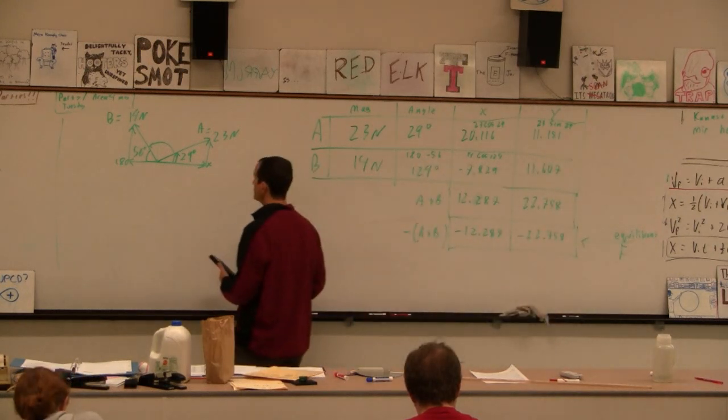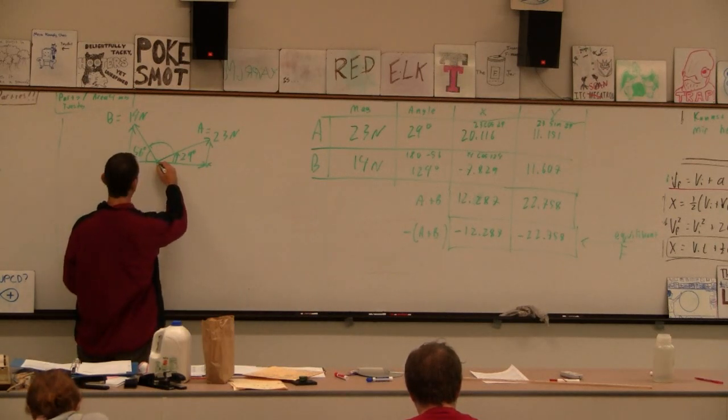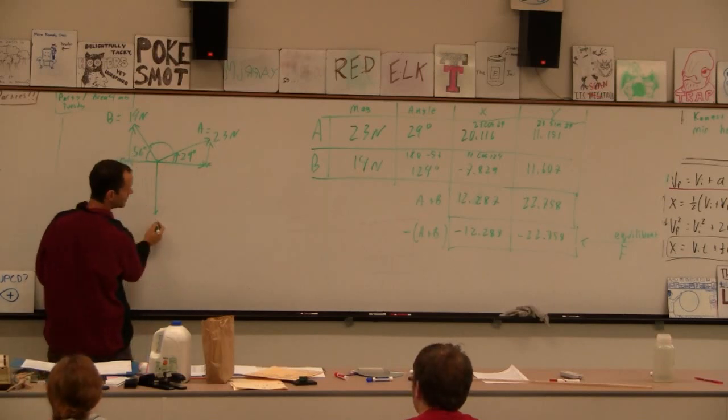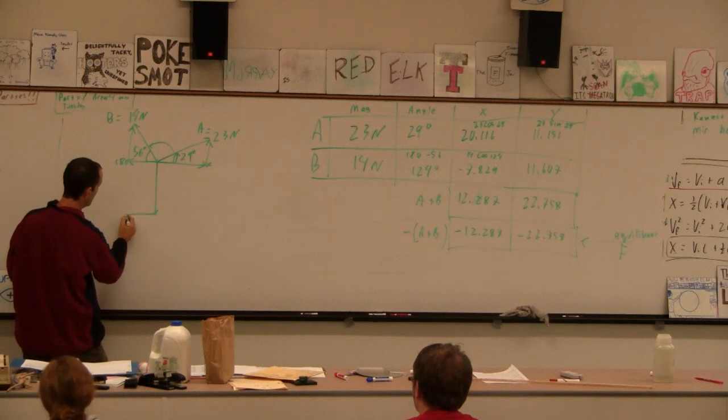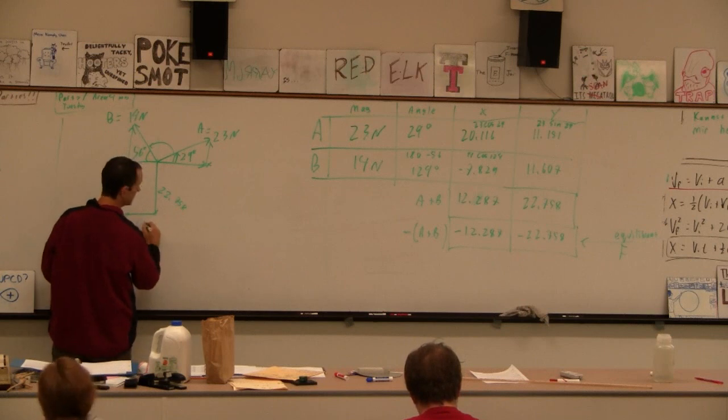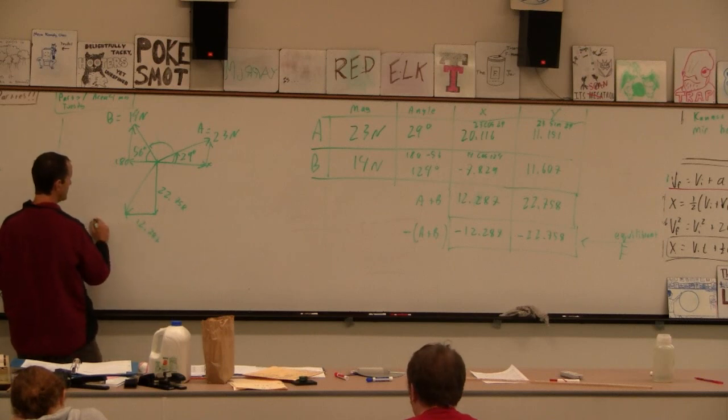And if we draw a picture of it, it's going to be down 22.758, so it's almost as long as that straight down, and then it's to the left 12. So 22.758, 12.287. There it is. So this is the equilibrant.